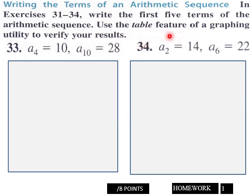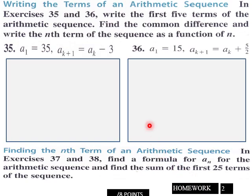Page 1 of Part 3: Write the first five terms of the arithmetic sequence. Use the table feature of a graphing calculator to verify your results. You got 8 points here, page 1.